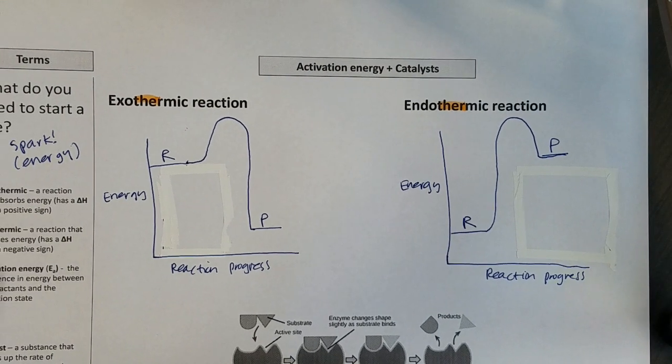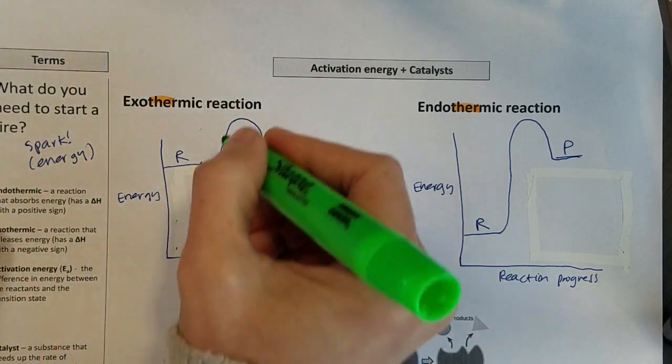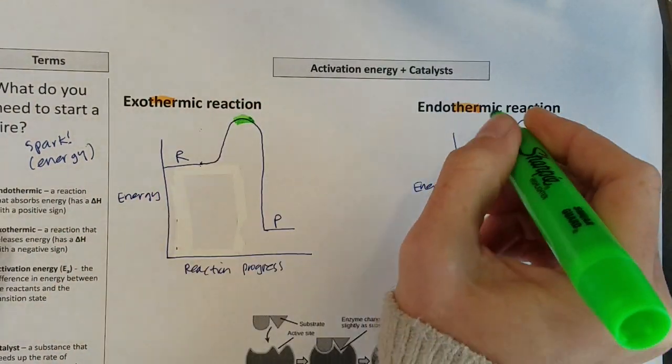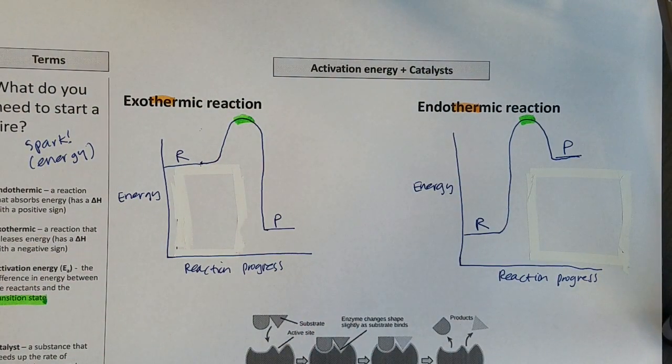So this space at the top of my graph here is going to be what we would call the transition state. Transition state shows up here, and that's the energy it takes to get an effective collision between two molecules, and you need that collision to get them to break bonds and form new ones.